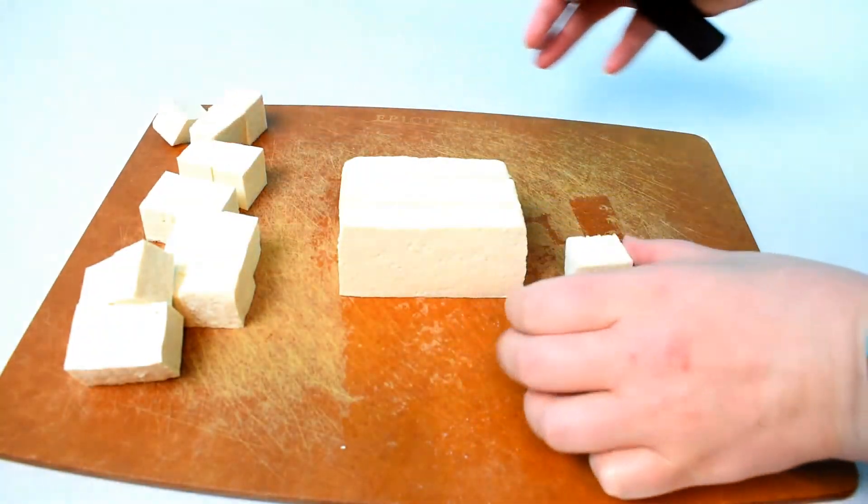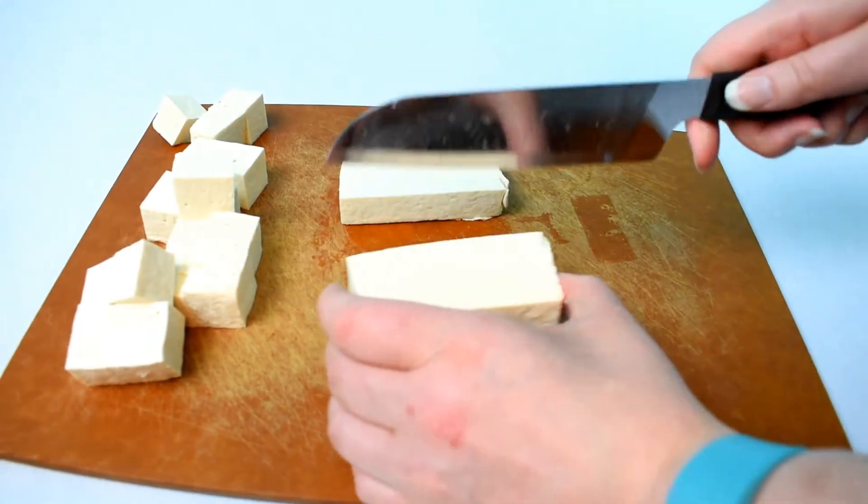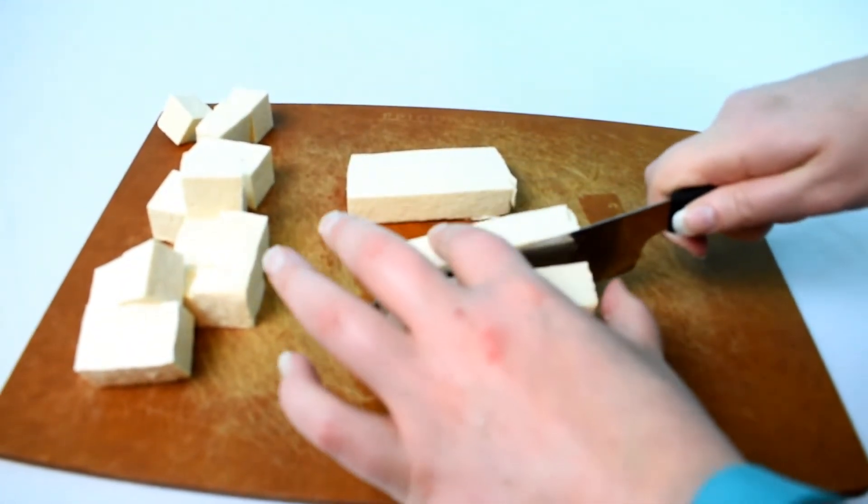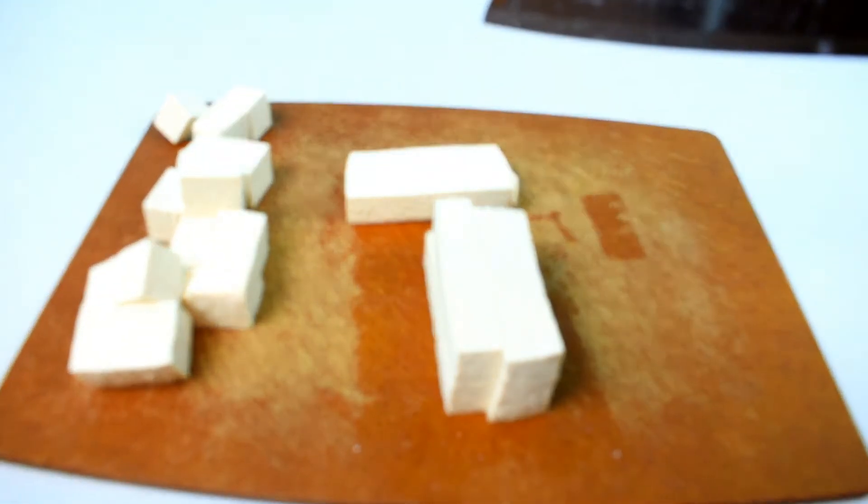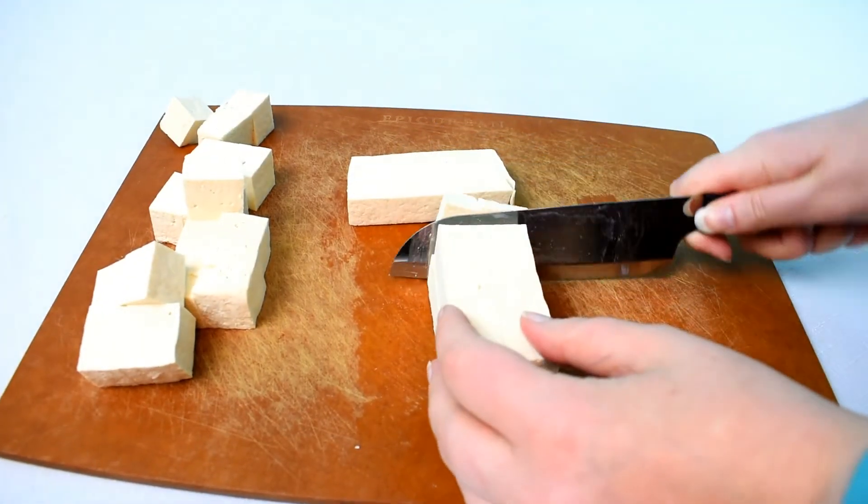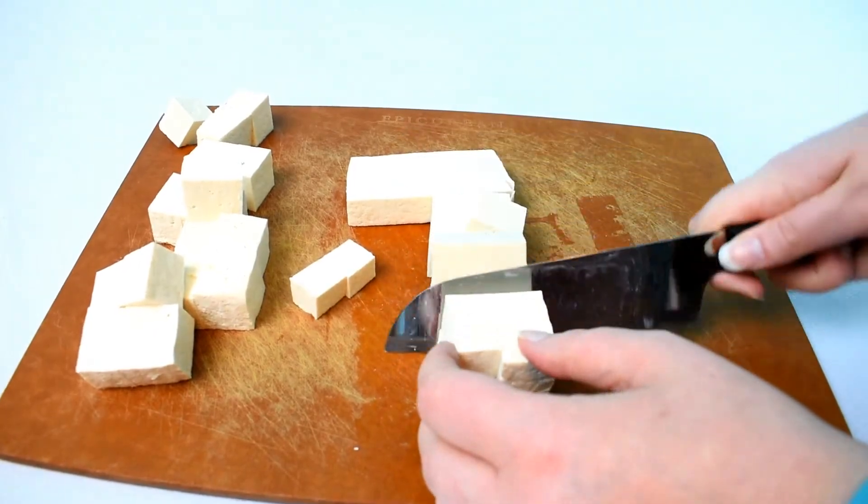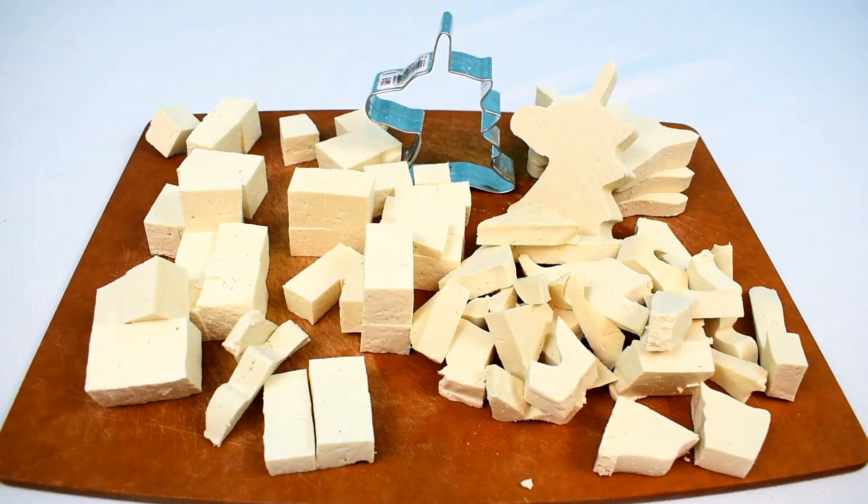So now I'm just chopping up some of the tofu. There really aren't any rules with this. You just want to chop it into cubes if you want. I like big cubes or you could do strips. So it really just depends on what you want it to be like. If you want your tofu to be a little bit more magical, you could use a cookie cutter and cut it out in a fun design like a unicorn.